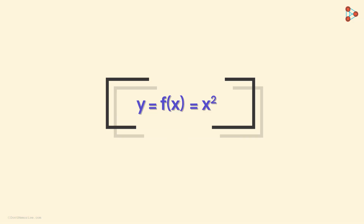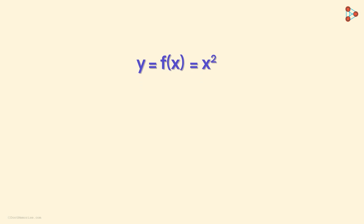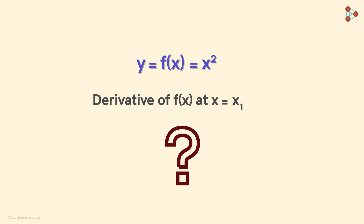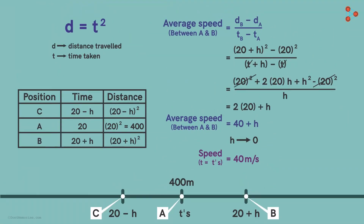Consider this simple example: y is equal to the square of x. Let's say we want to find the derivative of this function at a particular value of x, say x1. Actually, in one of our previous videos, we found the answer to this — we had found the instantaneous speed of an object for such a relationship between the distance travelled and the time elapsed.